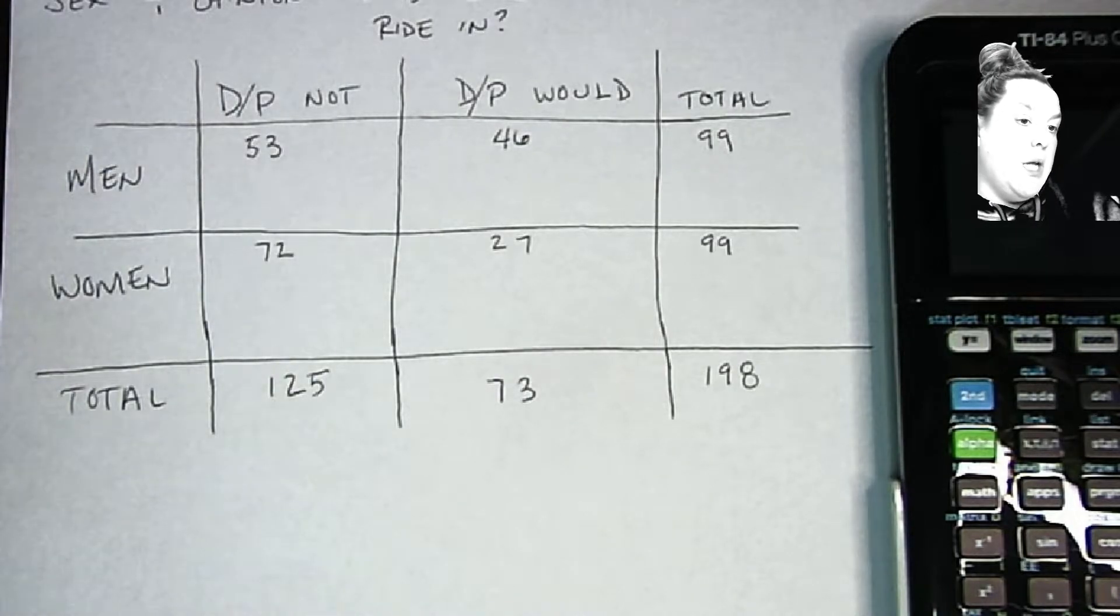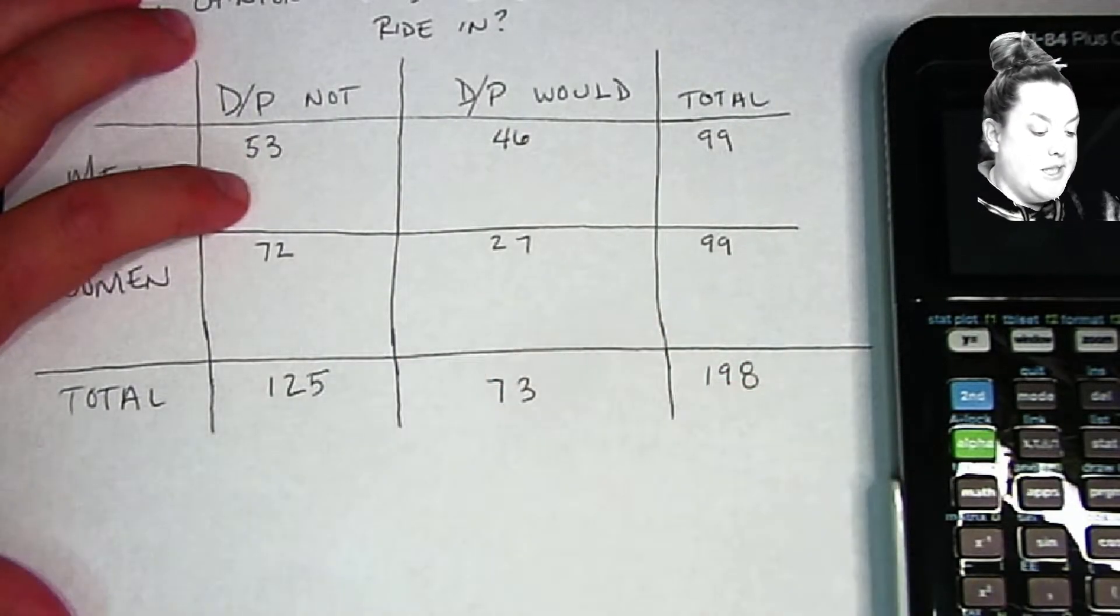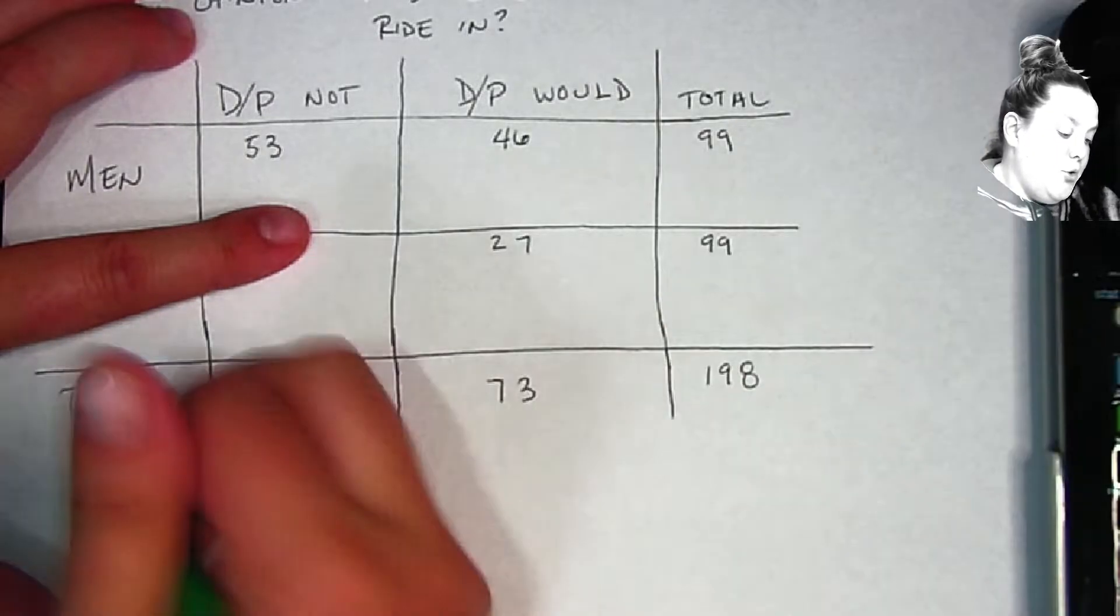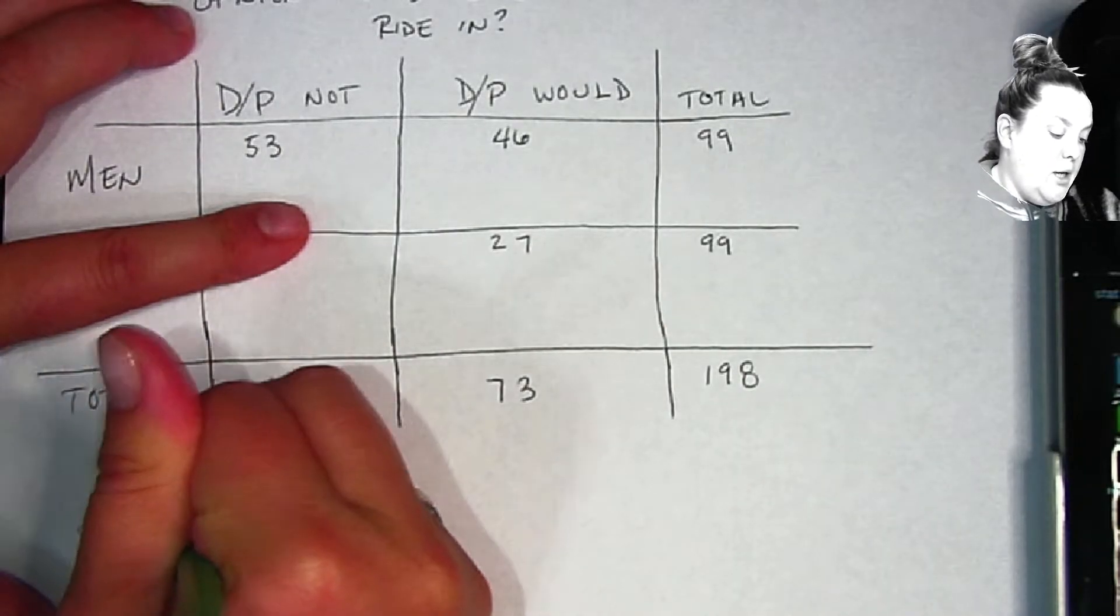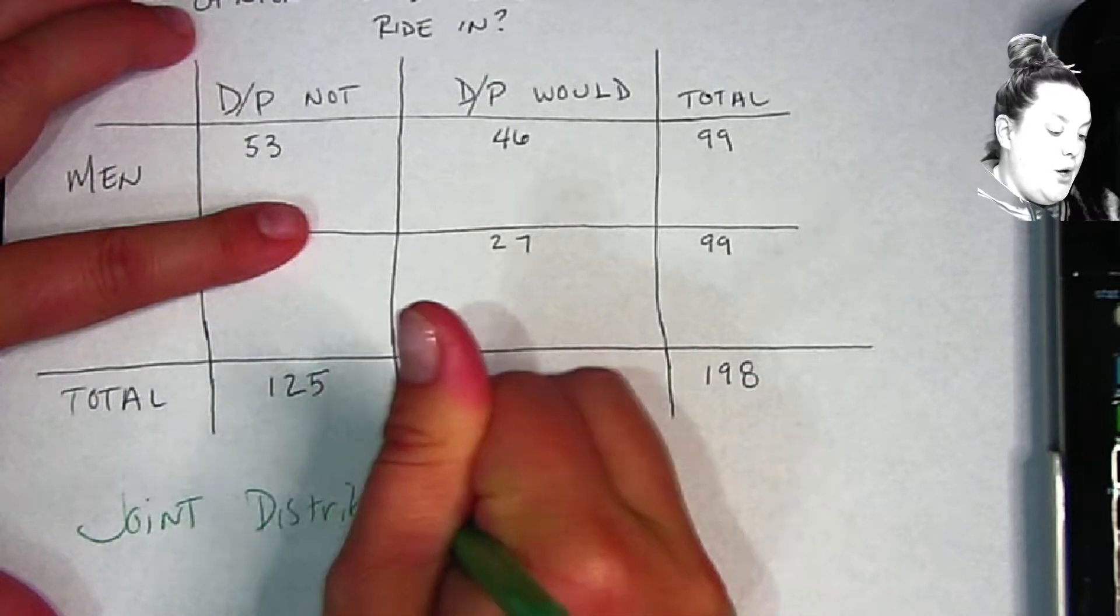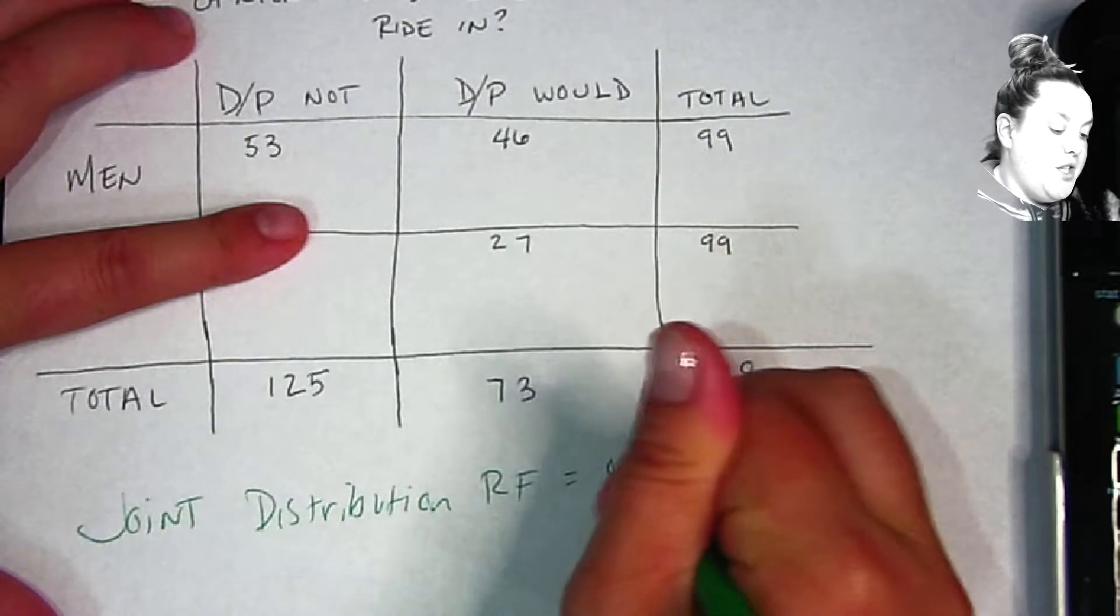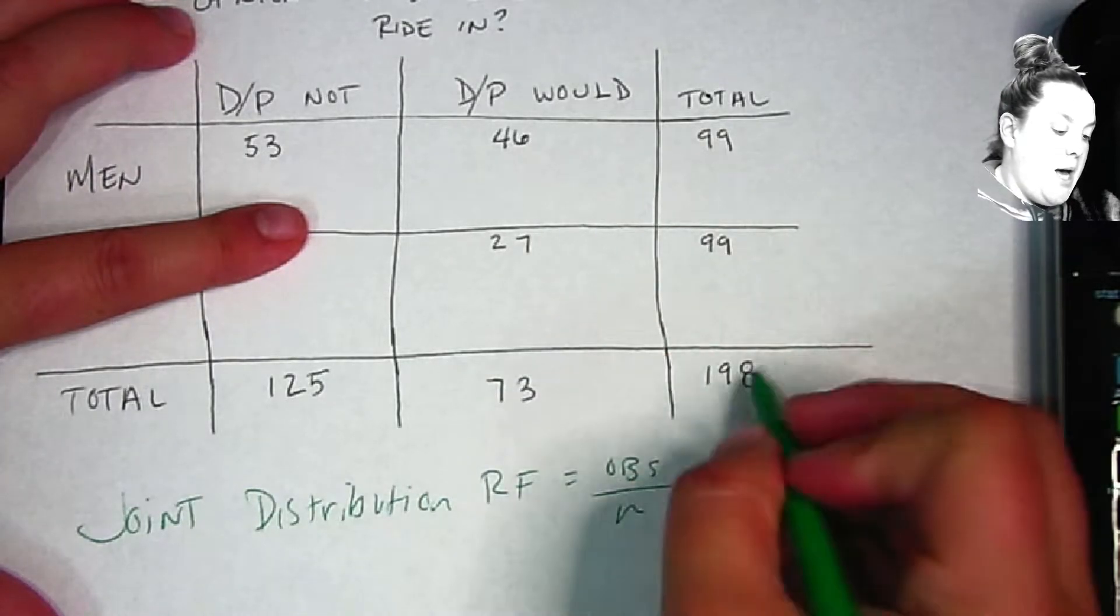The relative frequencies for each of these cells. When you do a joint distribution and you're calculating those relative frequencies, remember that you use the observed counts divided by n, where n is going to be that total in the bottom right hand corner.